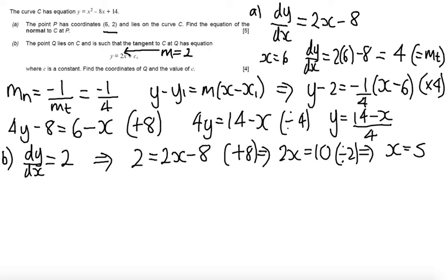I can find the y-coordinate for Q by substituting this into the equation of the curve. So I get 5 squared minus 8 lots of 5 plus 14. And so 25 plus 14 is 39 minus 40. We get that the y-value is minus 1. And so my Q-coordinate is 5 minus 1.